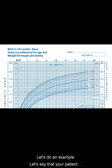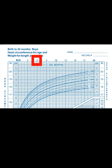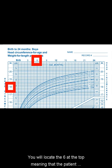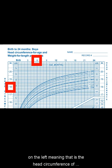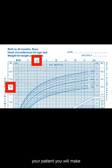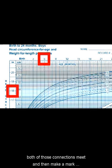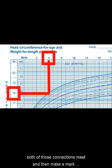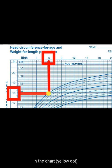Let's do an example. Let's say that your patient was 6 months old and had a head circumference of 18 inches. You will locate the 6 at the top, meaning the patient is 6 months of age, and you will also locate the 18 inches on the left, meaning that is the head circumference of your patient. You will make both of those connections meet and then make a mark in the chart.